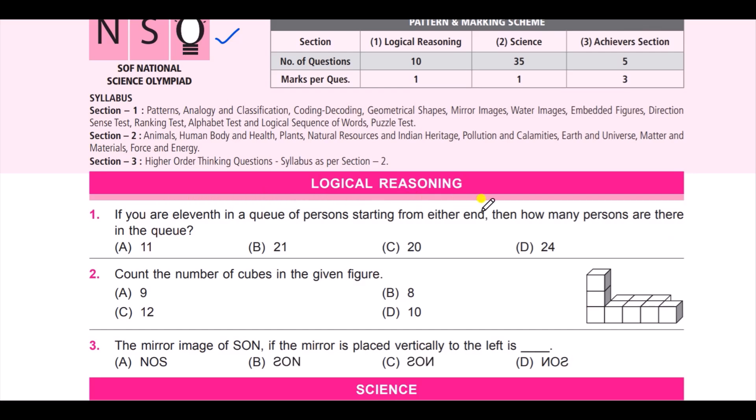Look at the options: option A is 11, B is 21, C is 20, D is 24. Think about it. If you are 11 in a queue of persons starting from either end, the answer is B: 21.